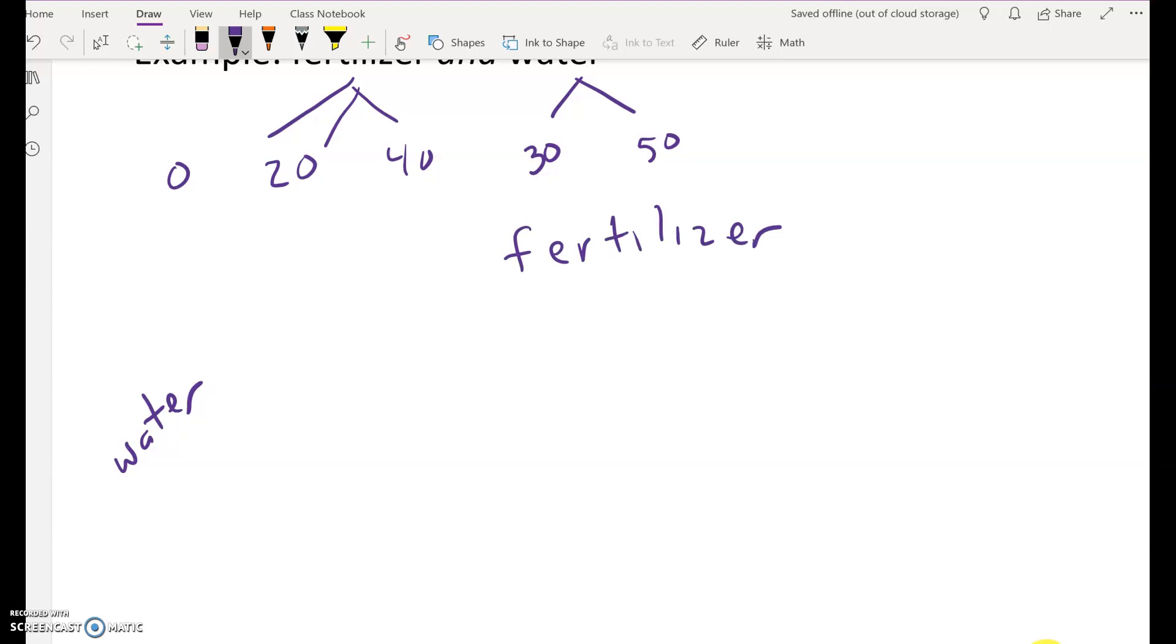and so you have water, 30 gallons per acre, 50 gallons per acre. Fertilizer, zero, 20, 40.